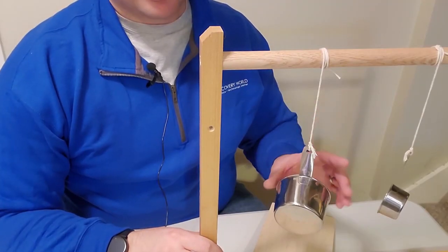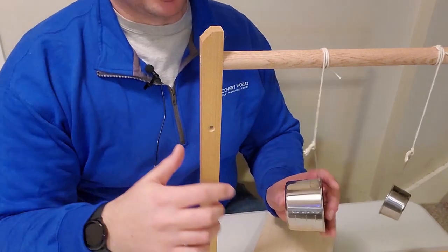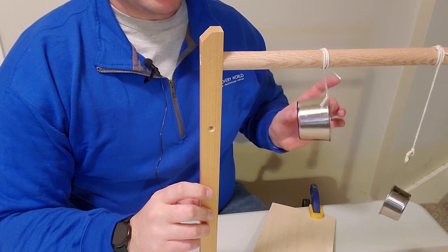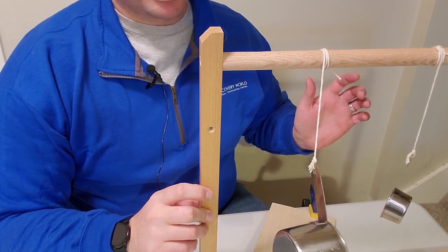For this device, you can see that I just took a measuring cup from my kitchen and attached it with a piece of string to this wood. Now if I pull back and I let go, it can swing back and forth freely. So that's a pendulum.